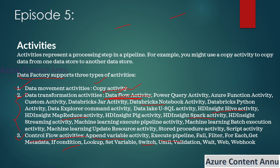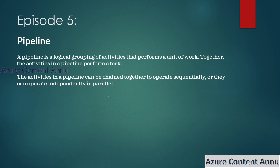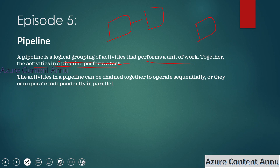Now moving on to pipelines. As discussed, pipelines are the logical grouping of activities that perform a unit of work. Pipelines are basically a combination of multiple activities, but a simple pipeline can also be created with just a single activity. The activities in a pipeline perform a certain task together, and they can be chained to operate sequentially or independently in parallel.